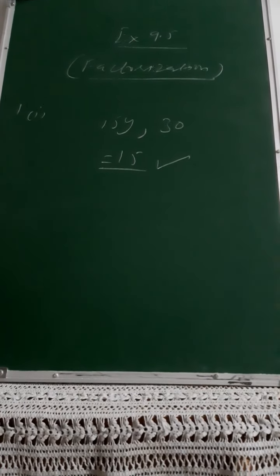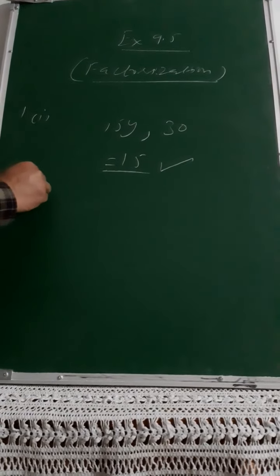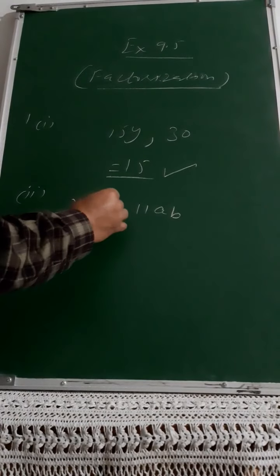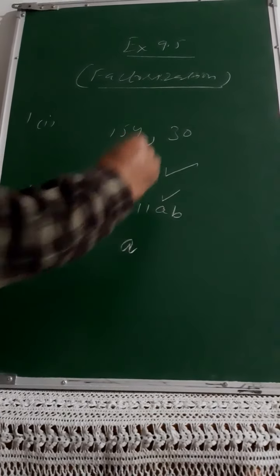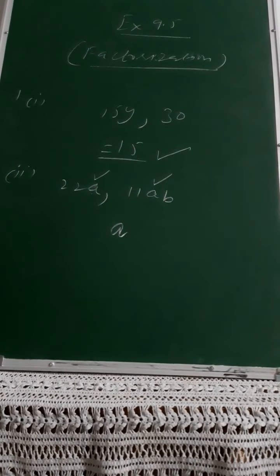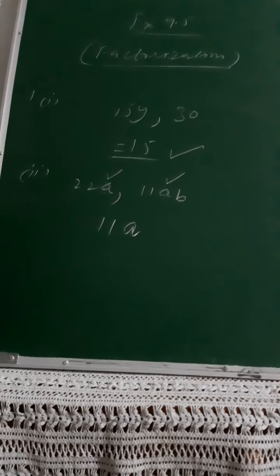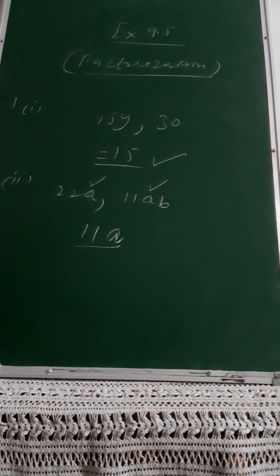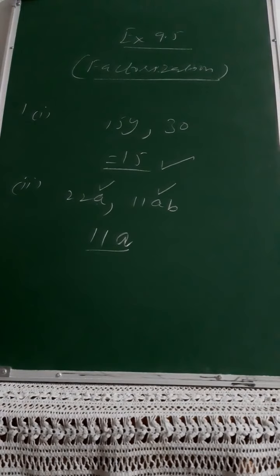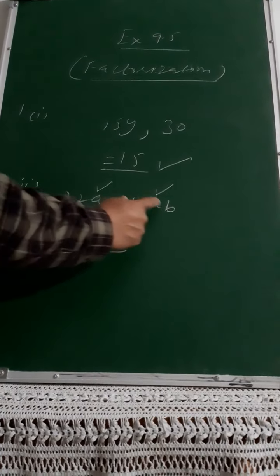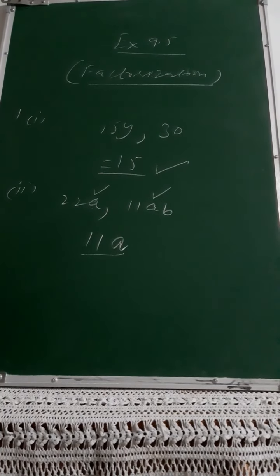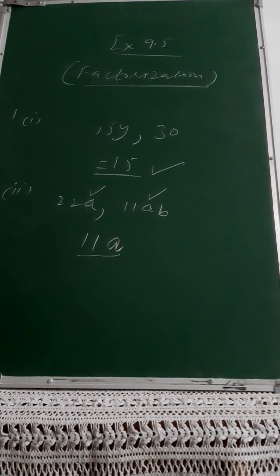Second part: 22a and 11ab. From the variable point of view, a is common in both terms, but b is only in the second term, so b cannot be common. From the numbers, HCF of 22 and 11 is 11. Therefore the common factor is 11a. Please devote quality time here so that in coming classes you do not face difficulty — make this very clear.